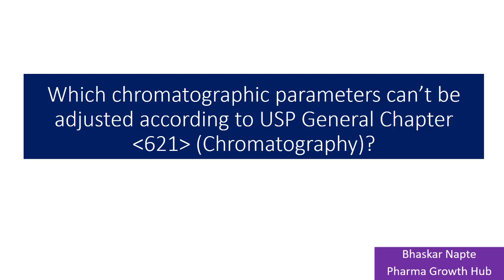General Chapter 621 from the USP deals with chromatography. Adjustment of chromatographic conditions is one of the very important segments of this chapter. According to General Chapter 621, you can make changes into certain chromatographic conditions to achieve system suitability requirements.